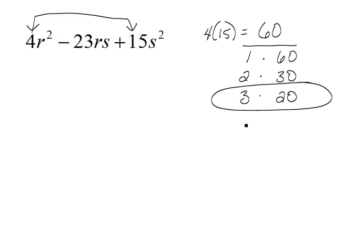3 times 20 will work if the 3 is negative and the 20 is negative. Let's make sure: -3 minus 20 is -23, and when I multiply these, -3 times -20 gives me a positive 60. So this is the right combination.